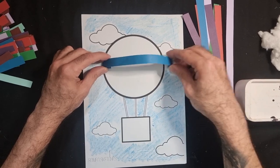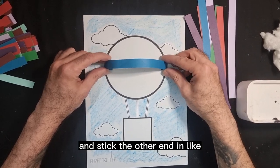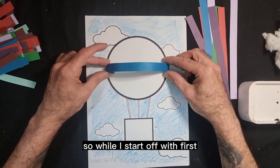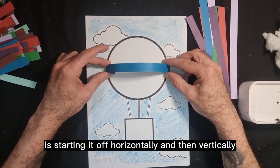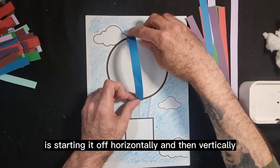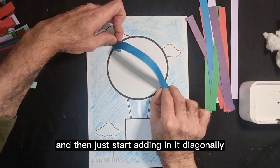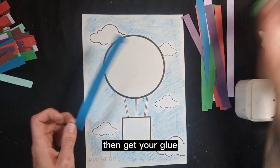And you're going to curve it round and stick the other end in like so. What I like to start off with first is starting it off horizontally and then vertically, and then just start adding in it diagonally.